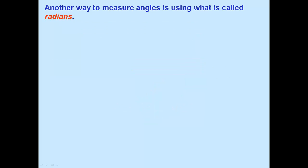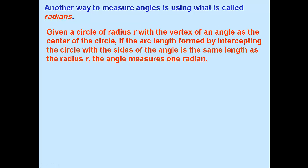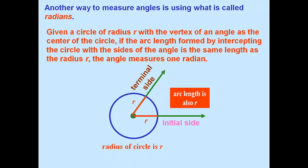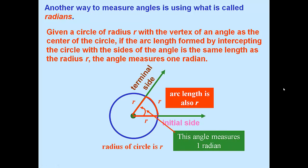Here's really the focus today. Another way to measure angles is using what's called radians. If you're given a circle of radius r with the vertex as the center of the circle, and the arc length formed by intercepting the circle with the sides of the angle is the same as the radius — that is, the radius equals the arc length — that's equal to one radian. It doesn't matter what the size of the circle is. If the arc length equals one radius, that is one radian.